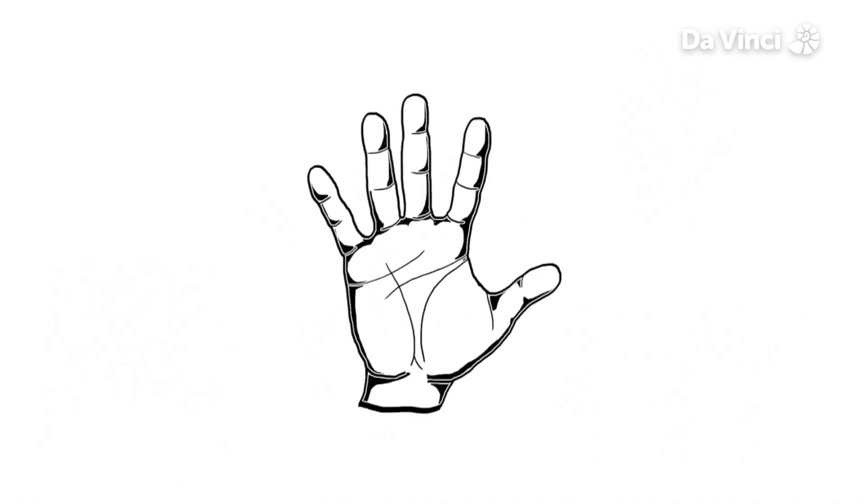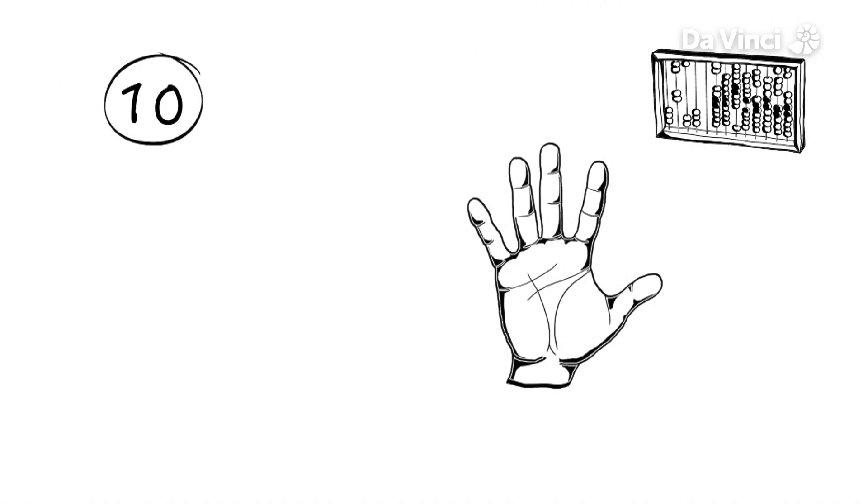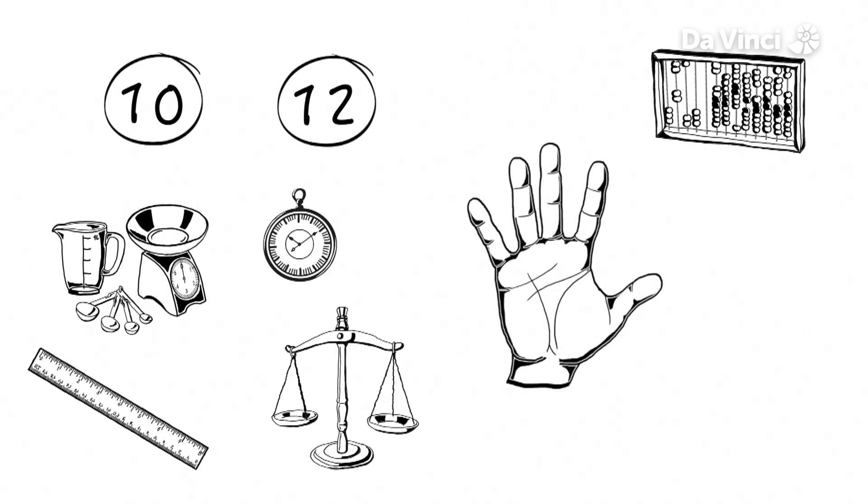You can count to 12 on one hand, using the thumb to point to each finger bone in turn. And we have 10 fingers, so our fingers could be the reason we have counting systems based on 10 and 12, giving us the basis of everything from our metric system to minutes and seconds.